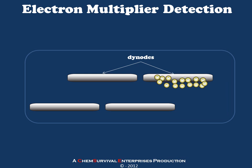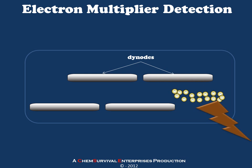A new set of impacts creates even more electrons, and very quickly a measurable amount of current is generated. In our cartoon, we've only created about 20 or so electrons from a single impact, when in fact within the instrument, about a million electrons are generated per impact in a well-tuned electron multiplier. This means it only takes a few impacts to generate enough electrical current for the workstation computer to pick up and read as a signal coming from the detector.